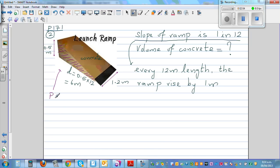If you consider this as the base and you have equal cross sections, then it's called a prism. Volume of a prism—you should know the formula—volume of the ramp would be the base area.